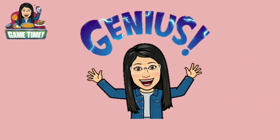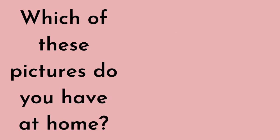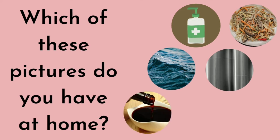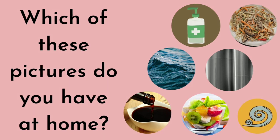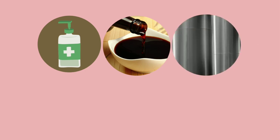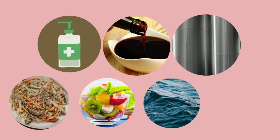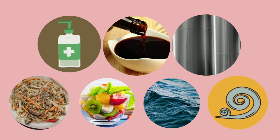You're such a genius! Wow, you just named all the pictures correctly. Which of these pictures do you have at home? Alcohol, pancit, seawater, steel, vinegar soy sauce, fruit salad, and air. In my home, I have alcohol, vinegar soy sauce, and steel. And I like to eat pancit and fruit salad. We live near the seawater, that's why I often see seawater and smell fresh air.